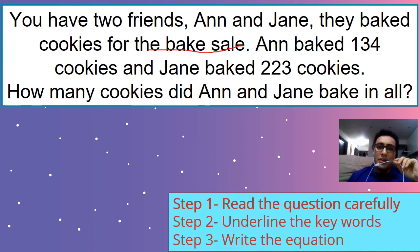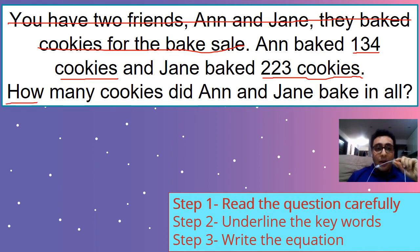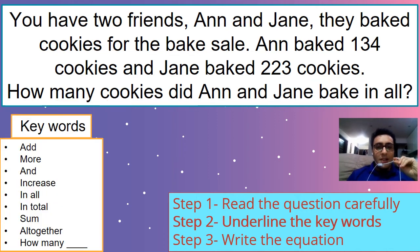Now remember, guys. The numbers are not always digits. Sometimes they are words like T-W-O. Like two. So be careful. Ann and Jane, they baked cookies for the bake sale. Okay. I don't care. This is not important. Not important at all. I only care about this. Ann baked 134 cookies. And Jane baked 223 cookies. This is what's important to me. Because the question asked me, how many cookies? All right. And, all right. Let's see. All right, guys. Now let's underline the keywords.